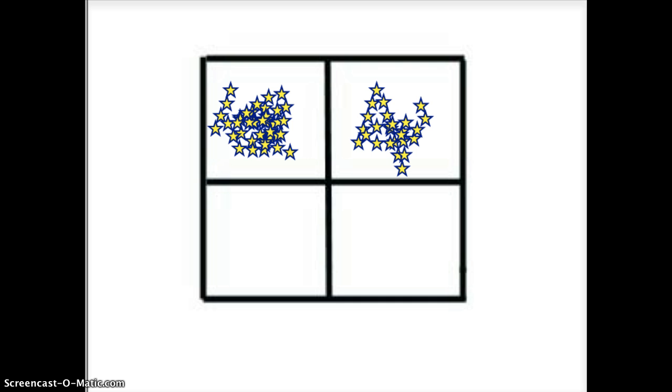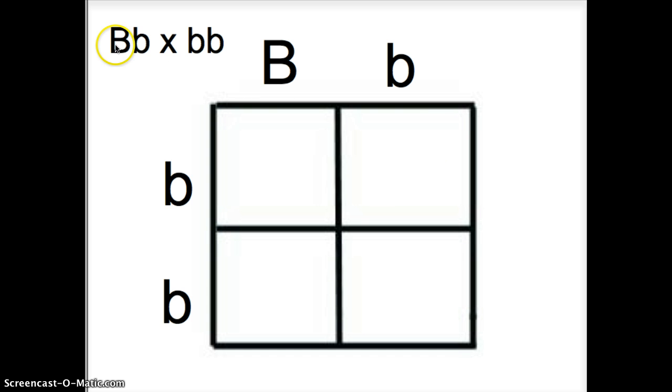The first thing we always need to figure out is: what are the parents? In this scenario, let's say that your dad is Bb and your mom is bb. The way you set up a Punnett square is you put one of the parents on top and one on the side—it doesn't matter what you put where. For here,